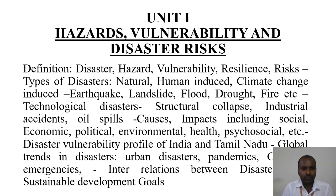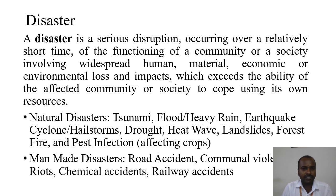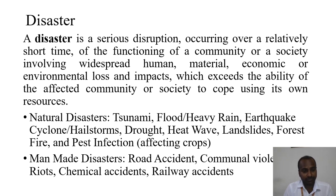Now I am going to teach Unit 1: Hazards and Vulnerability and Disaster Risk. What is meant by disaster? Disaster is a thing which occurs in a sudden or short time, disrupting the functioning of a community or society, involving human, material, economic or environmental losses. There are a lot of types of disaster, and each type creates a lot of problems for living and non-living things.